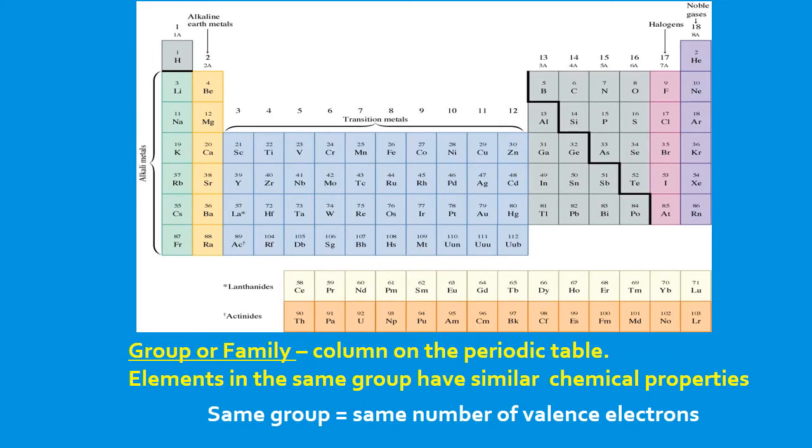A group is a column on the periodic table, and the group is also known as a family. So this would be one family, this is another family. So all these columns on the periodic tables are called groups or families. Elements in the same group have similar chemical properties because they have the same number of valence electrons. And we'll talk about valence electrons later on also.